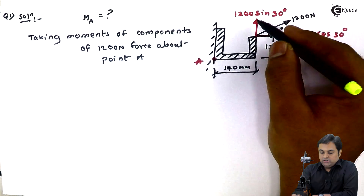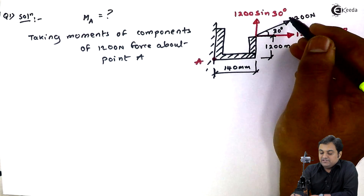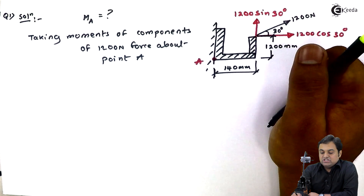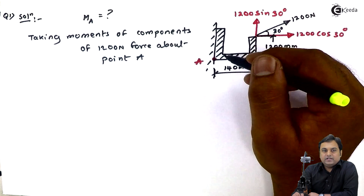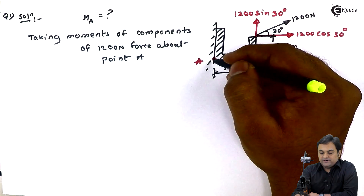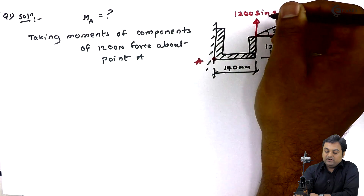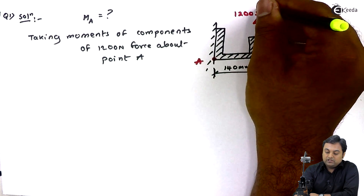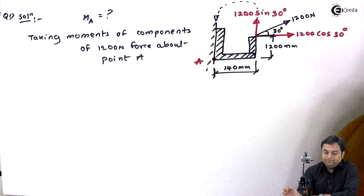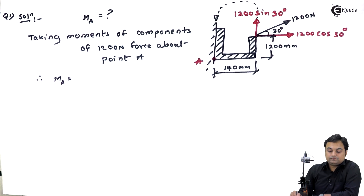We will take these two components. First consider 1200 sin 30. We have to take the moment of this force about point A. The distance of 1200 sin 30 from point A is 140 mm. To bring this force moment to point A, it acts in the anti-clockwise direction, so it will only reach point A in the anti-clockwise sense.